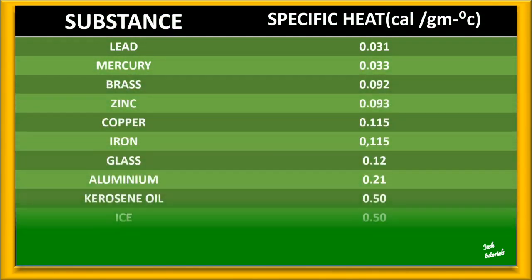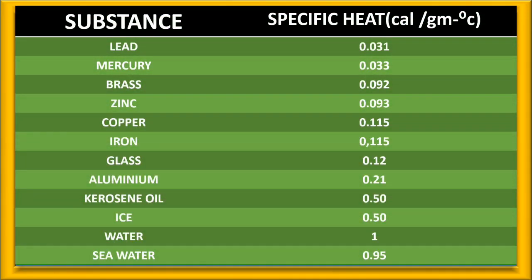From the calculation, we got the specific heat of lead to be 0.0364, whereas in the table it is 0.031. That is an approximate value — not a problem. Now look at the table.